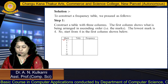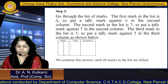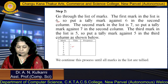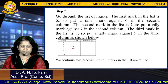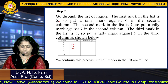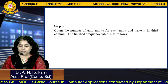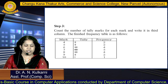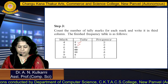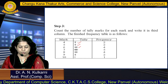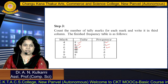Start with 4 from your list of data items. Go through the list of marks. The first mark in the list is 6 — put a tally mark against 6 in the second column. The second mark is 7 — put a tally mark against 7. The third mark is 5 — put a tally mark against 5. Continue this process until all the marks in the list are tallied. Then count the number of tally marks for each mark and write it in the third column. For example, 2 tally marks for 4, 2 tally marks for 5, 4 tally marks for 6. So frequency is 2, 2, and 4 respectively. In this way, we can construct a frequency table.